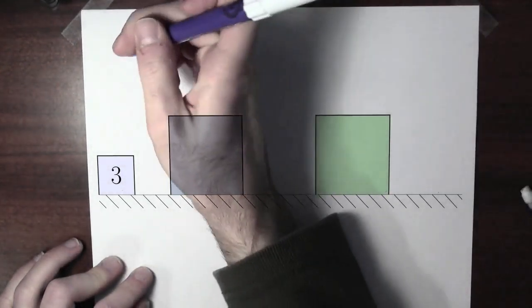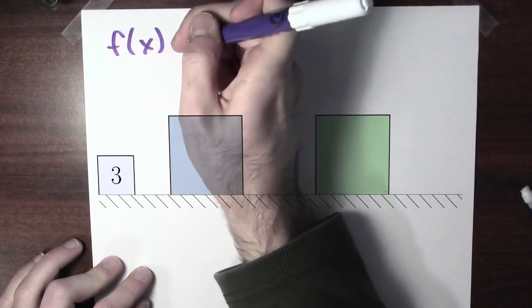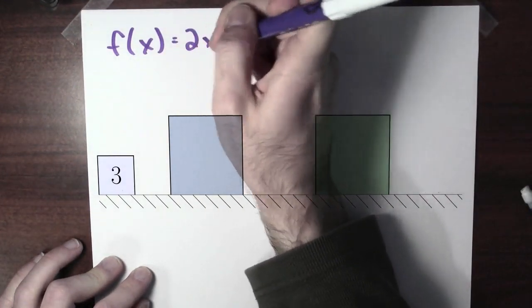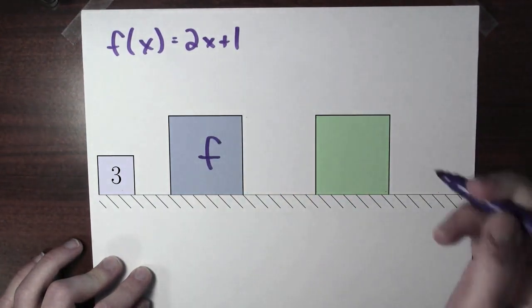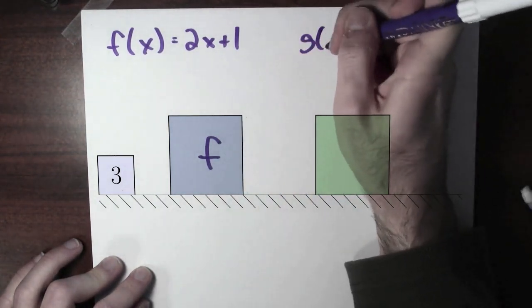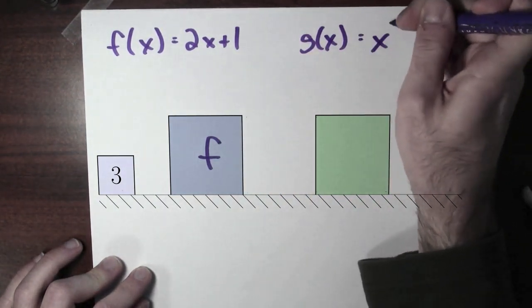Let's pick out what these functions should be. Maybe the first function I'll call f, and f of x will be 2x plus 1. So I'll call this function f. And maybe the second function I'll call g, and g will take its input and square it. So g of x will be x squared. So I'll label this function g.